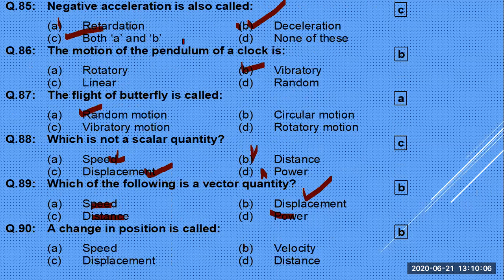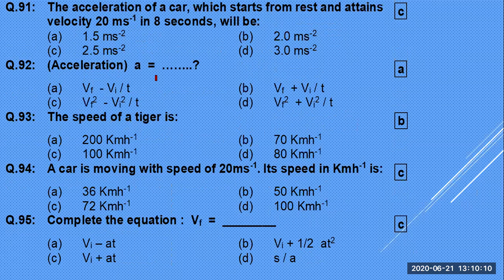The acceleration of a car that starts from rest and attains 20 m/s in 8 seconds: use Vf = Vi + at. Vi is 0, Vf is 20, t is 8. So a = (Vf − Vi) / t = 20 / 8 = 2.5 m/s². You can also use 2aS = Vf² − Vi².